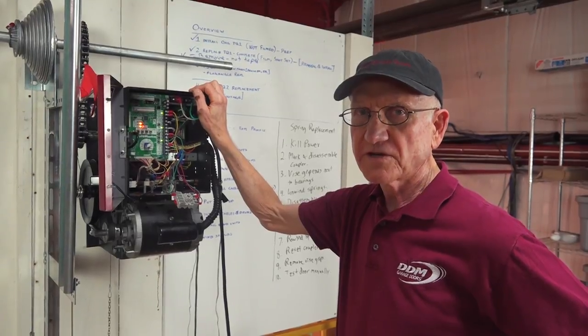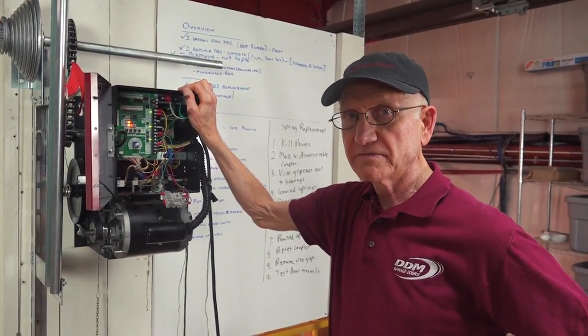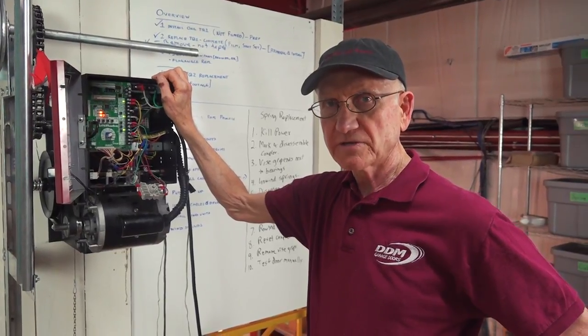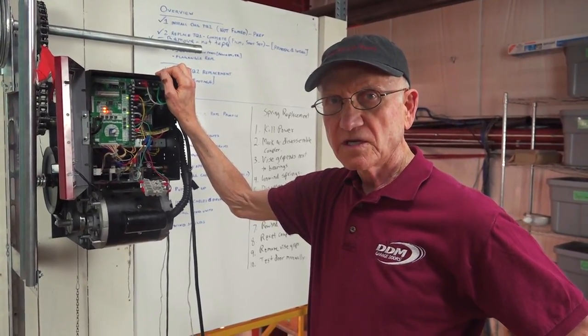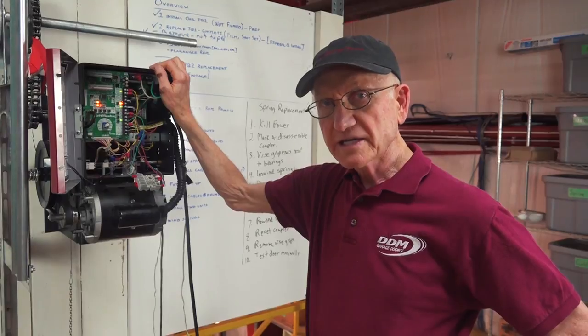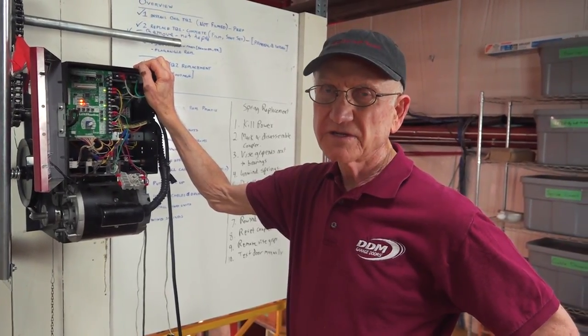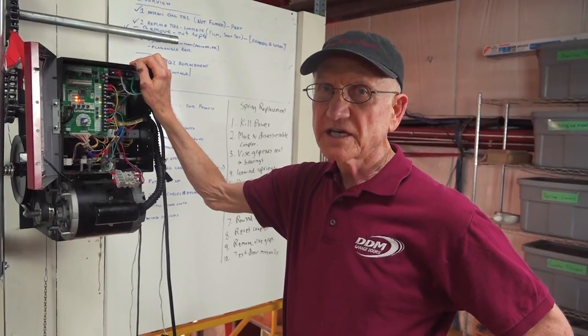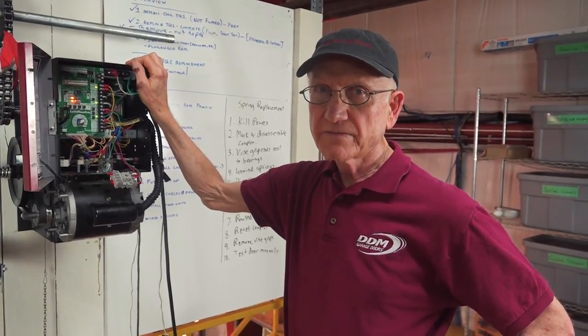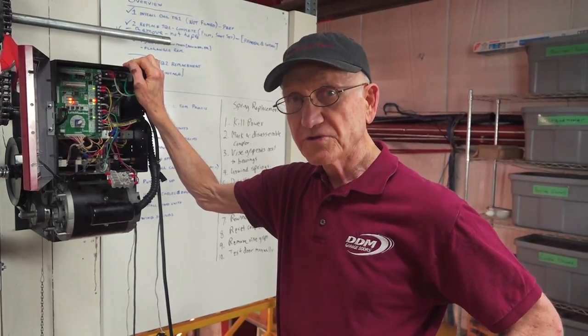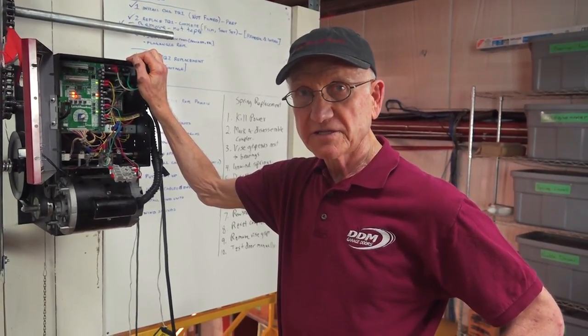The clutch will slip for a number of reasons. One of the more common reasons that the clutch slips is that you have a broken spring on the door. You can also have bent tracks. Somebody may have hit the door and it's damaged. There's something that is obstructing the door from allowing the opener to open the door. You need to find out what that is.